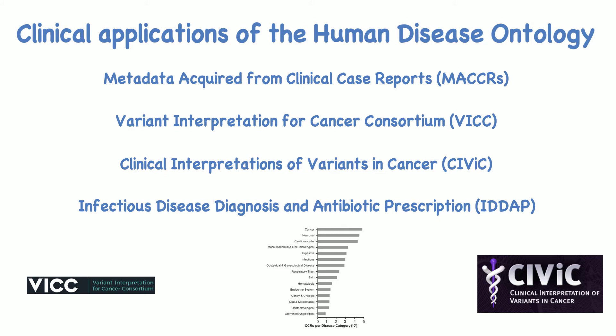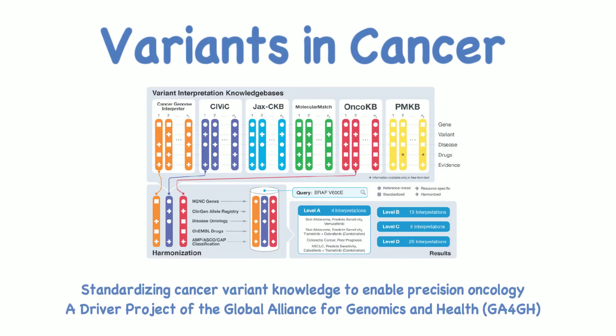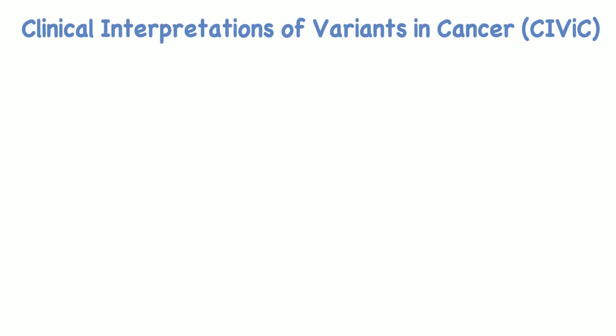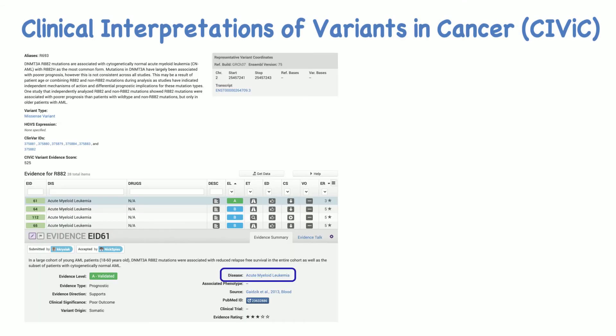Let's look at how the Human Disease Ontology is enabling clinical resources with some examples in greater detail. Variants in Cancer integrates a number of knowledge bases to standardize cancer variant knowledge, and enables precision oncology based on Human Disease Ontology disease terms. Clinical Interpretations of Variants in Cancer utilizes the Human Disease Ontology to standardize diseases, for example acute myeloid leukemia.